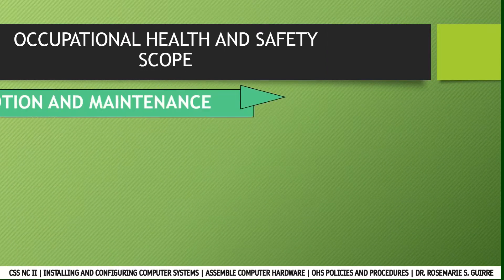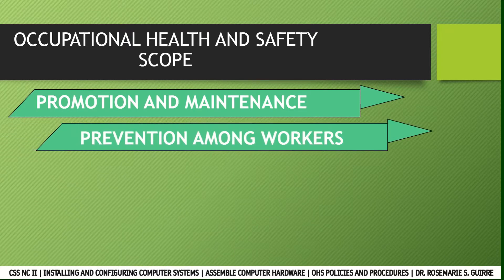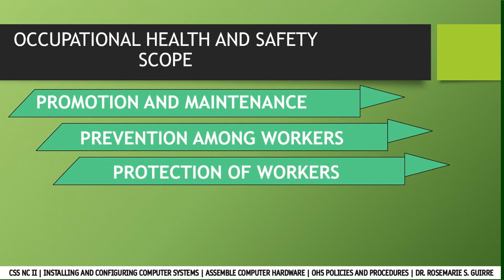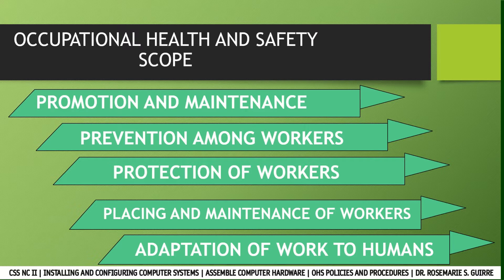Occupational health and safety scope. First, promotion and maintenance — the highest degree of physical, mental, and social well-being of workers in all occupations. Second, prevention among workers — addressing adverse effects on health caused by their working conditions. Third, protection of workers — protection from risk resulting from factors adverse to health. Fourth, placing and maintenance of workers in an occupational environment adapted to their physical and mental needs. Fifth, adaptation of work to humans. In other words, occupational health and safety encompasses the social, mental, and physical well-being of workers — that is, the whole person.